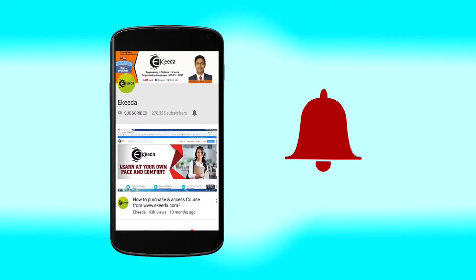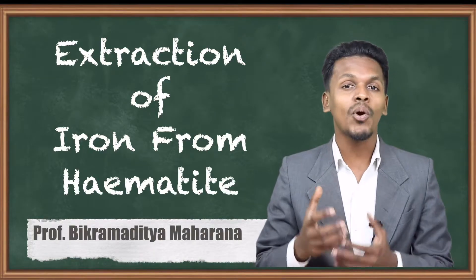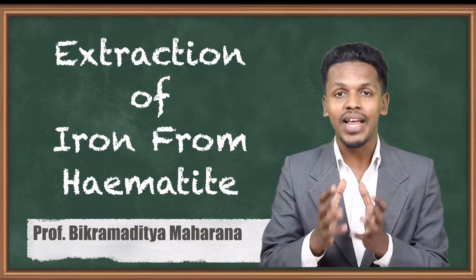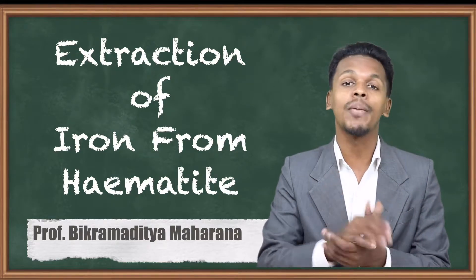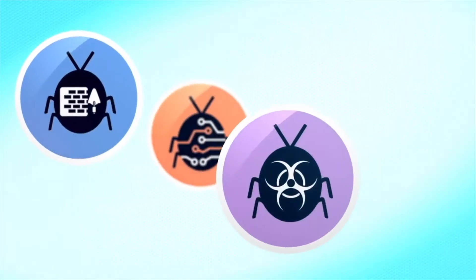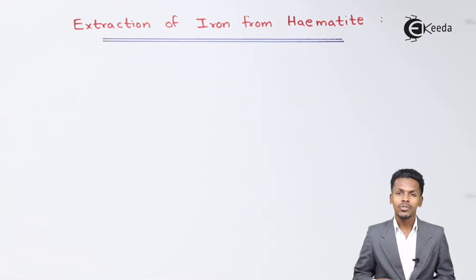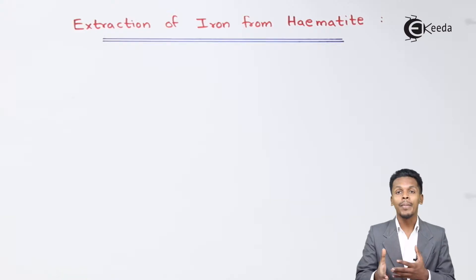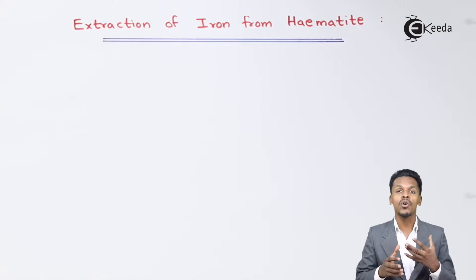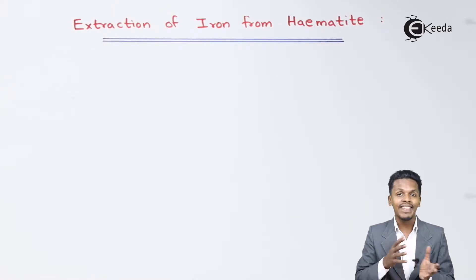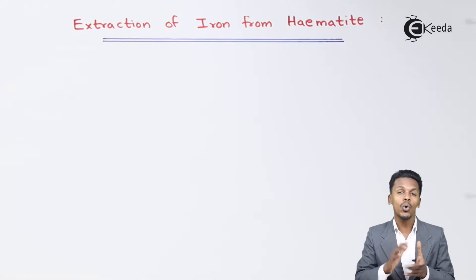In the previous lecture we discussed the extraction of zinc from zinc blende. Now in this topic we are going to talk about extraction of iron from hematite — what is the reaction behind this and where does it occur. The extraction of iron from hematite is done in a blast furnace, which consists of ore as well as reducing agents like carbon and carbon dioxide. These are very helpful in reducing the ore of iron, thereby obtaining pure Fe or a crude metal of Fe.